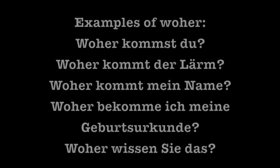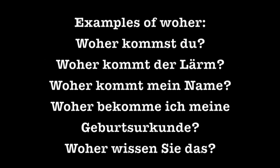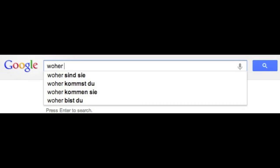Woher is the opposite of Wohin — it means 'from where'. It's used to inquire about the past location of someone or something. Examples: Woher kommst du (from where do you hail / where do you come from?), Woher kommt der Lärm (from where is the noise coming?), Woher kommt mein Name (from where does my name come?), Woher bekomme ich meine Geburtsurkunde (from where do I get my birth certificate?), Woher wissen Sie das (from where do you know that?). Googling 'Woher' gives: Woher sind Sie, Woher bist du — both meaning the same as Woher kommst du and Woher kommen Sie — all meaning 'from where do you hail?'